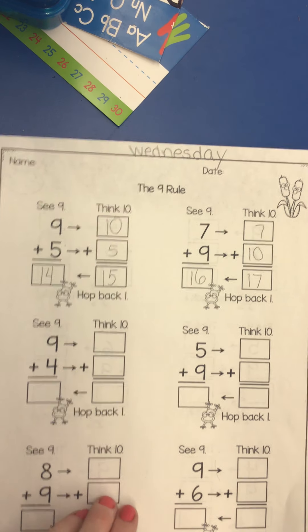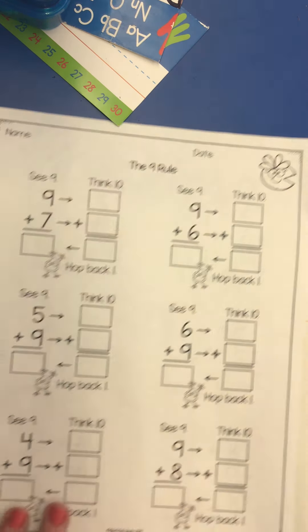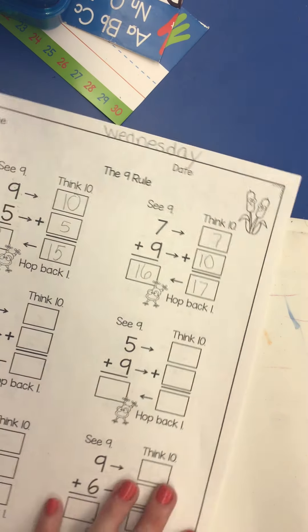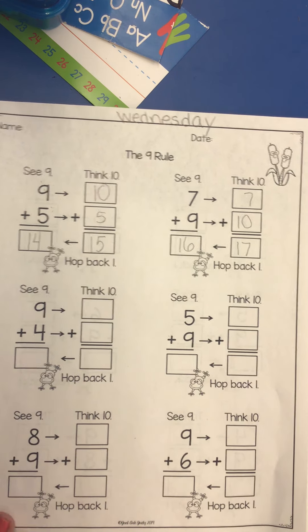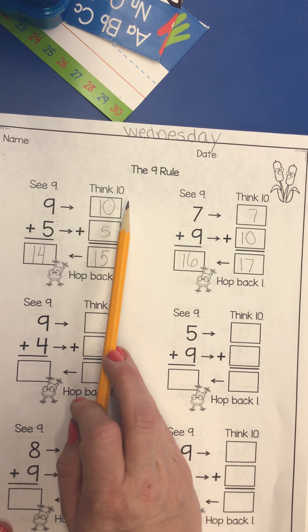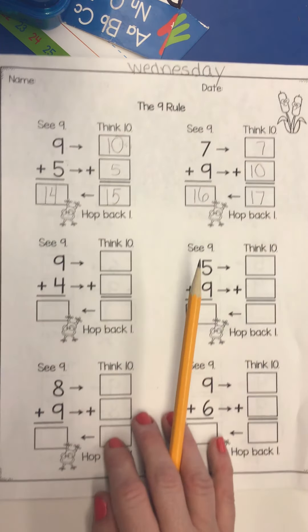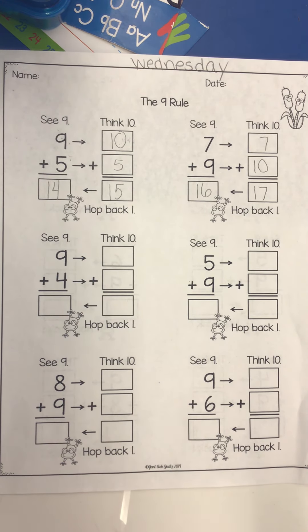Okay. You're going to finish this worksheet. There's some on the back. This is called the nine rule. Very, very, very similar to making 10 because you are still making a 10, but this time you're making it kind of in your head. You're kind of thinking it in your head. Okay. Any questions, send me a message. Have fun. Talk to you later.